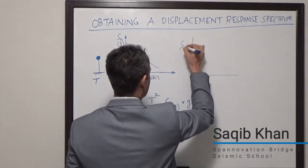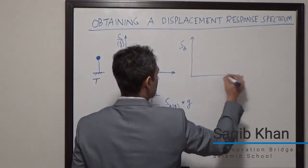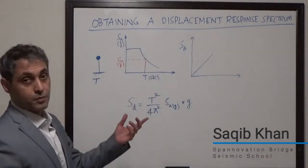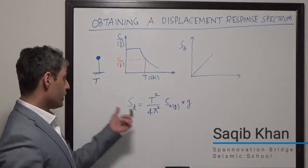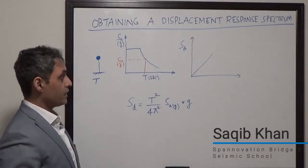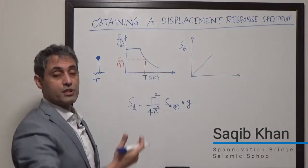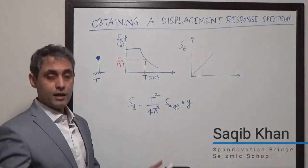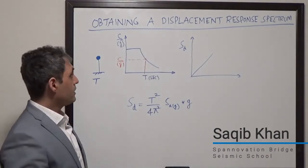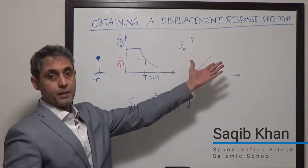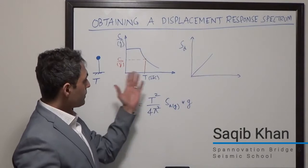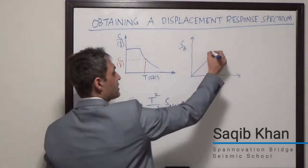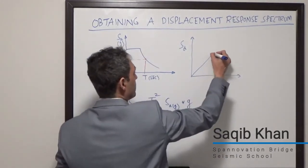So SD generally looks like this — it grows linearly to a certain point. Now if one were to just stick with this formula, it would grow indefinitely, which does not make physical sense, because for a large earthquake you can imagine that the displacement is going to be bounded. If you keep increasing the period, you cannot have unbounded displacements — this value cannot just keep growing indefinitely.